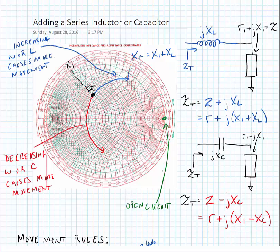Much like before, we can read the final value of the reactance from the edge of the chart as X sub f, where X sub f equals X1 minus XC.